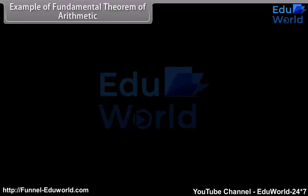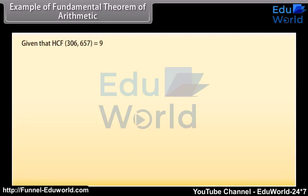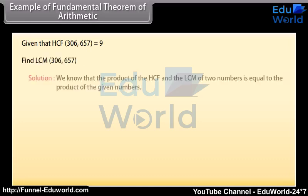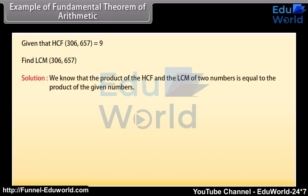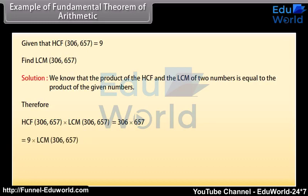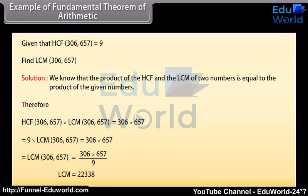Example: Given that HCF(306, 657) = 9, find LCM(306, 657). We know that the product of HCF and LCM of two numbers equals the product of the given numbers. Therefore, 9 × LCM(306, 657) = 306 × 657. So LCM(306, 657) = (306 × 657) / 9 = 22,338.